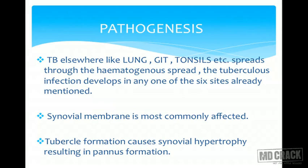The pathogenesis of tuberculosis is very important. Tuberculosis elsewhere — like the lungs, gastrointestinal tract, and tonsils — spreads through hematogenous spread. The infection develops in any one of the sites already mentioned. The synovial membrane is the most commonly affected part. The tubercle formation usually causes synovial hypertrophy resulting in pannus formation.